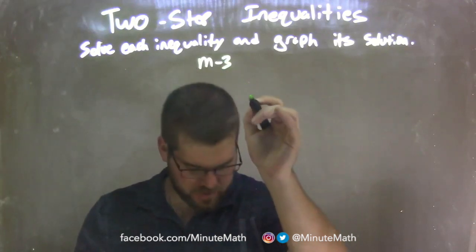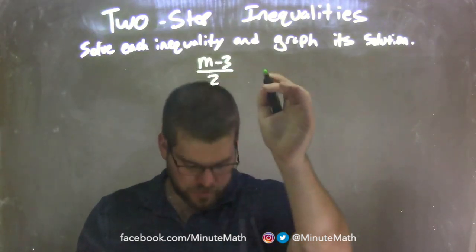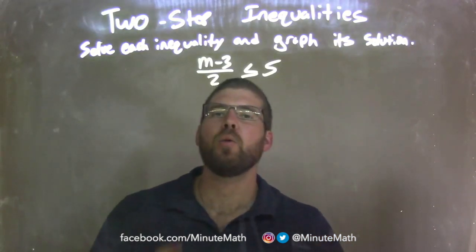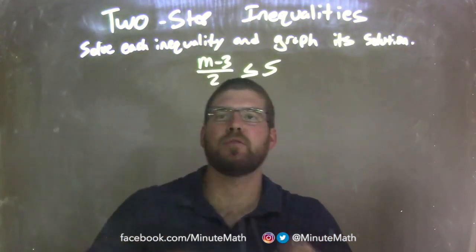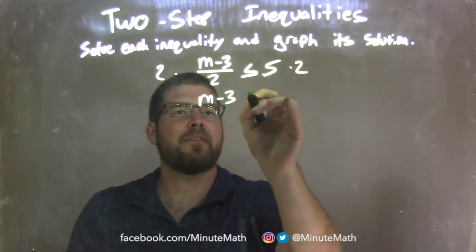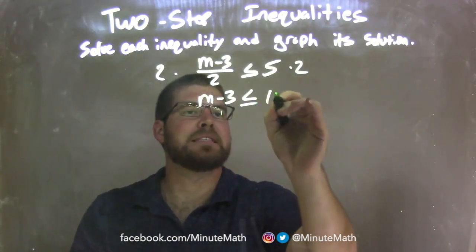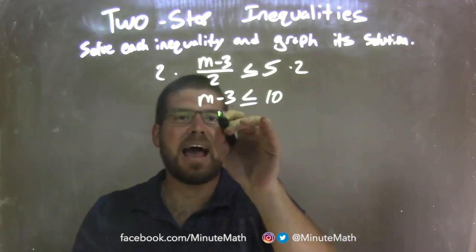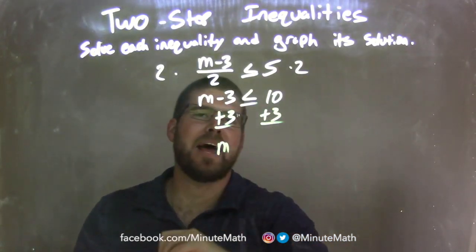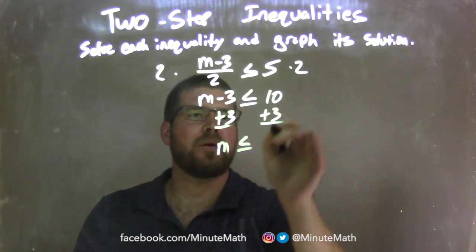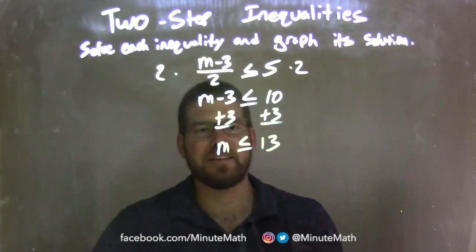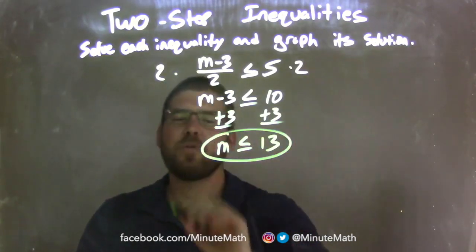m minus 3, all over 2, is less than or equal to 5. My first step: multiply both sides by 2, giving me m minus 3 on the left is less than or equal to 5 times 2, which is 10. I then add 3 to both sides — opposite of subtraction — giving me m by itself is less than or equal to 10 plus 3, which is 13. m is less than or equal to 13 as our final answer.